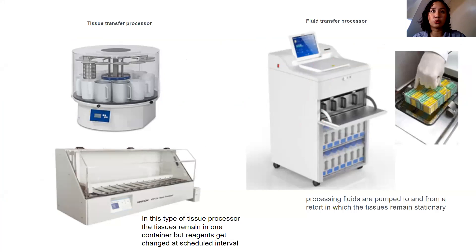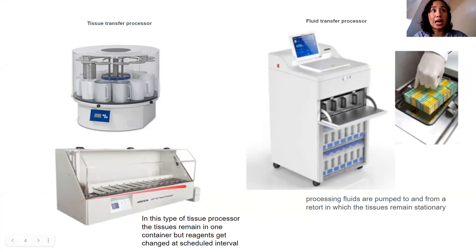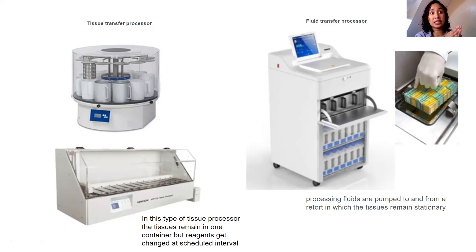However, we already have automated ways of processing tissues. There are two main types of tissue processors for automated tissue processing. The first is the tissue transfer processor, where the tissue is transferred from one reagent to another — just like in the process of manual mason jars, but the machine transfers it for you.